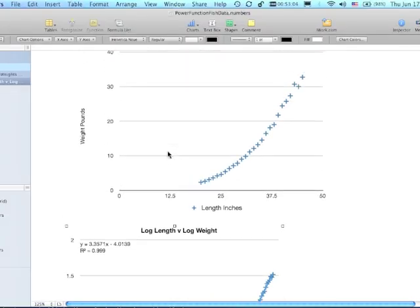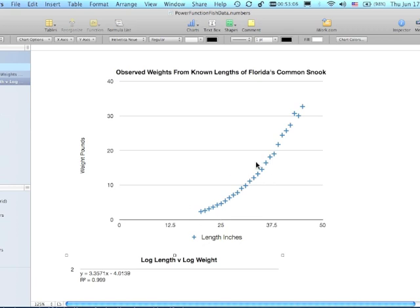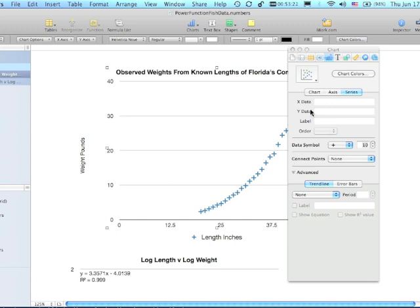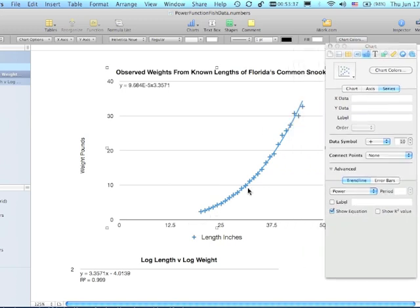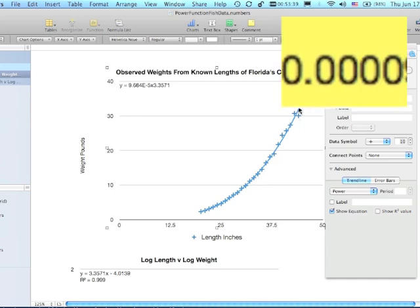Going up to the other chart that helped us confirm that this is a power function or would probably be modeled by a power function. I'm going to select this graph, inspector, and I'm over on series and I have the advanced open. For trend line I'm going to select a power function and I'm going to say show equation, and what that did is it put in the curve representing the power function.